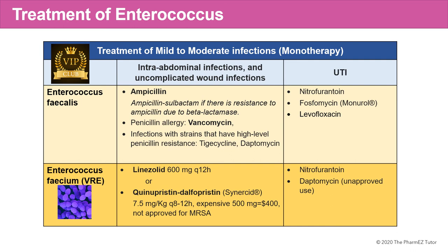When we talk about Enterococcus faecium, we're talking more about treating vancomycin-resistant Enterococcus, or VRE. There aren't really too many choices: we can use linezolid, or a product named quinupristin-dalfopristin, or Synercid. Synercid is a very expensive drug used primarily for VRE; it is not approved for MRSA and is given as a Q8 or Q12 hour regimen. For urinary tract infections, nitrofurantoin can be used for VRE, and daptomycin is an alternative but its use in VRE urinary tract infections is unapproved.